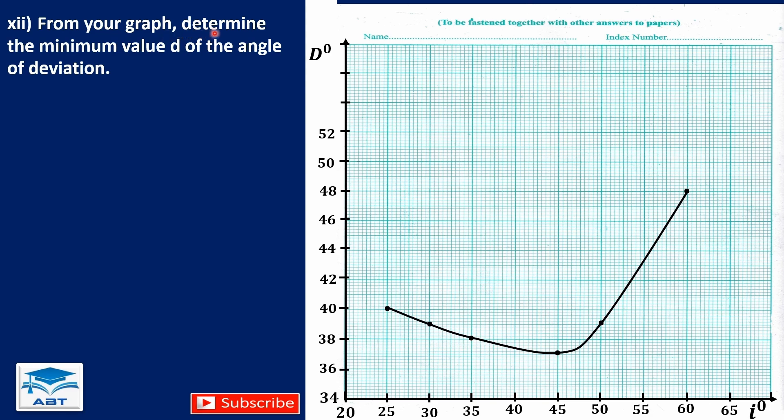From your graph, determine the minimum value D of the angle of deviation. So we draw a line here touching the base of the graph, and we determine the minimum value of D. That is between 36 and 38. The middle of 36 and 38 is 37 degrees. So D equals 37 degrees.